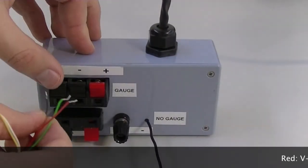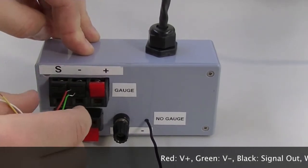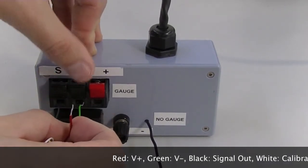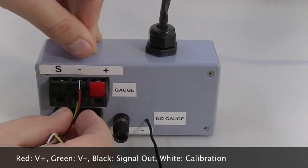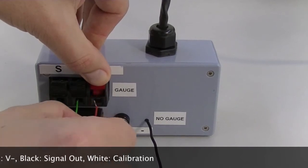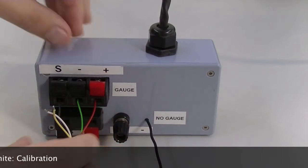Next, wire up the sender according to the supplied instructions. Black to signal, green to negative and red to positive. In this case the yellow wire is not used.